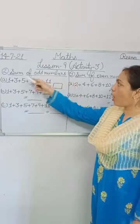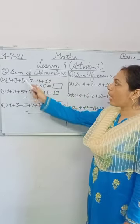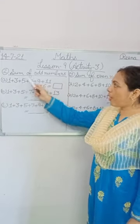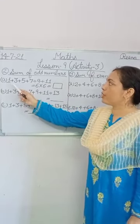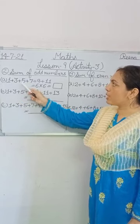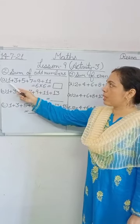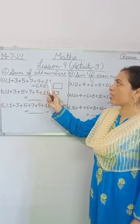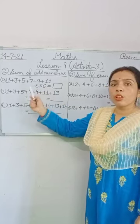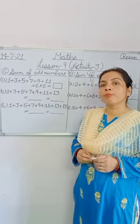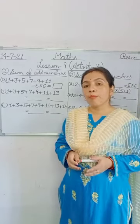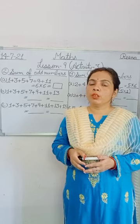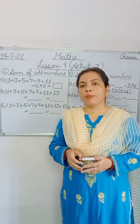In question number 2, we have been given the sum of odd numbers. In all questions, we have been given odd numbers — the sum of odd numbers — that means 1 plus 3 plus 5 plus 7 plus 9 plus 11. Now tell me, what is an odd number? The numbers which are not divisible by 2 are called odd numbers.